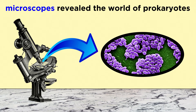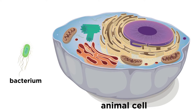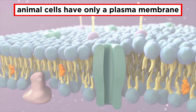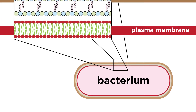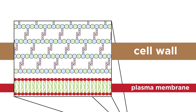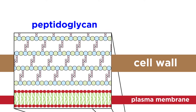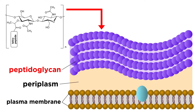But once microscopy came about, the world of prokaryotes revealed itself. As we examined these critters, we saw that they were much smaller and simpler than animal cells. In terms of structure, animal cells have only a plasma membrane, while bacteria have a plasma membrane and a cell wall, which is typically made of peptidoglycan — a polymer of sugars cross-linked by short polypeptides that encloses and protects the bacterium.